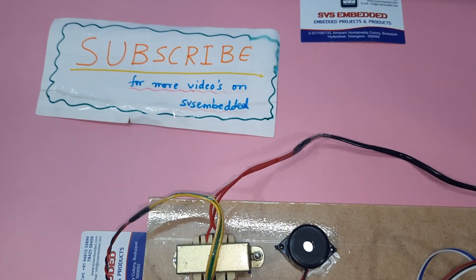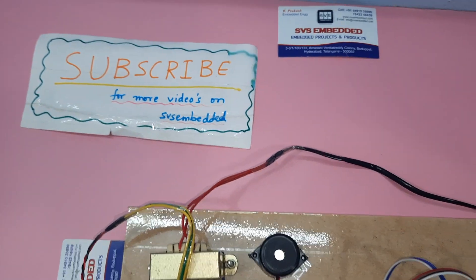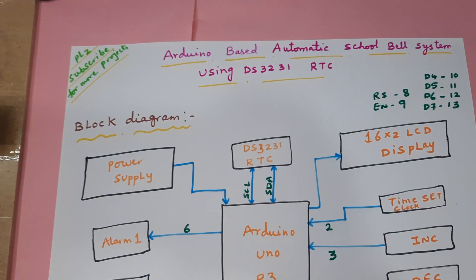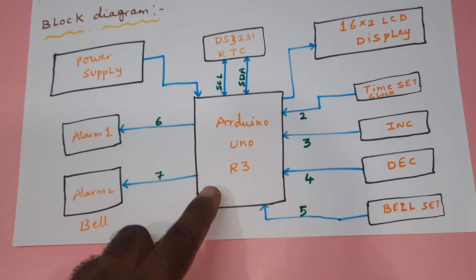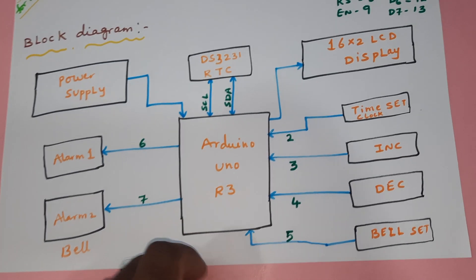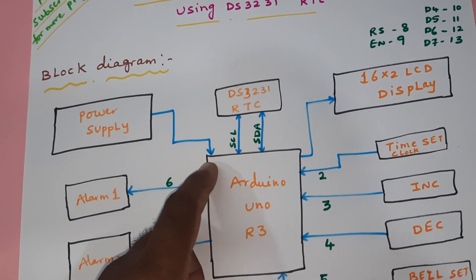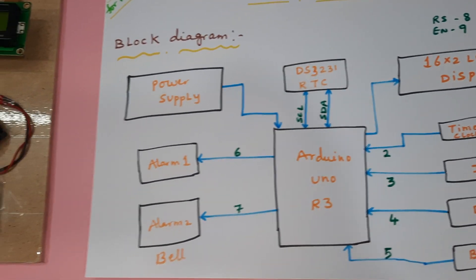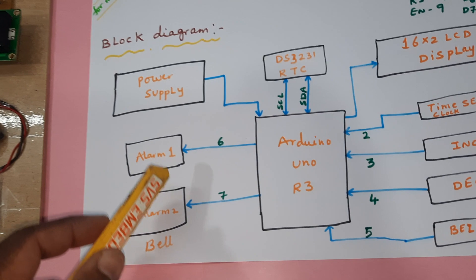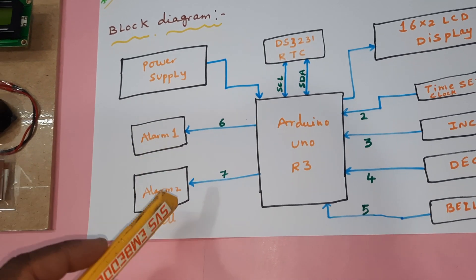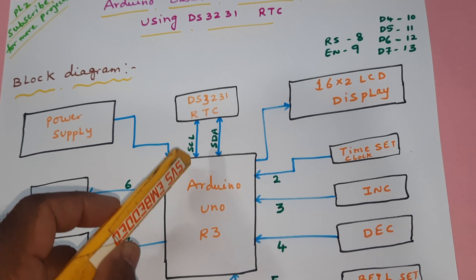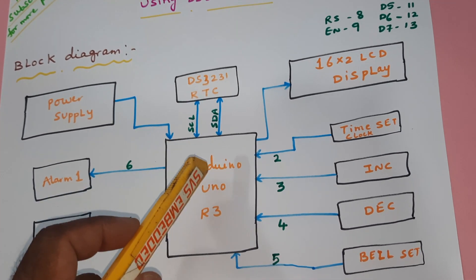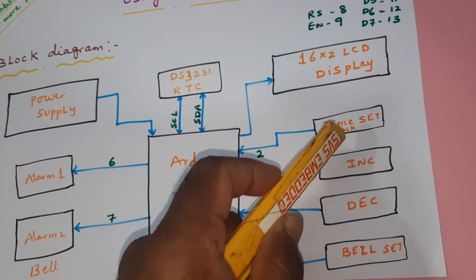Hi, we are from SVS Embedded. The project title is Arduino-based automatic school bell system using DS3231 RTC IC. Here we are using Arduino Uno R3, a 16x2 LCD display, DS3231 RTC IC, and two alarms — alarm one and alarm two — for setting the time and bell alarms. It uses 5 volts power supply and I2C protocol with serial clock and serial data lines.